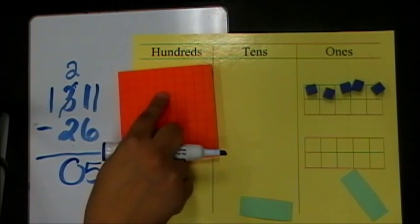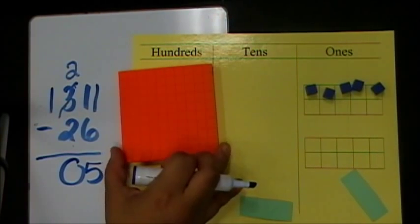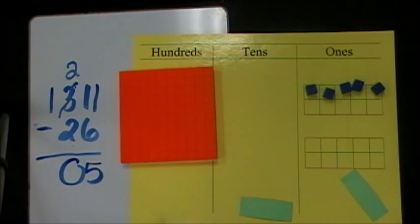Start over. I have 1 hundred. They want zero 100s. Do I have enough? Yes. I don't take it away because it was zero 100s that were wanted. So I have 1 hundred left over.